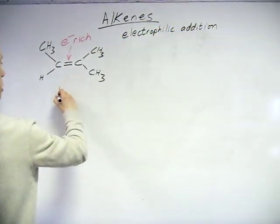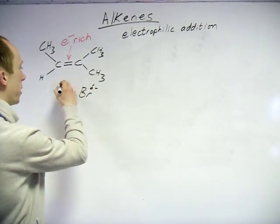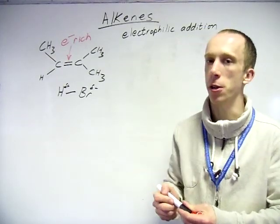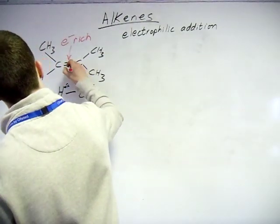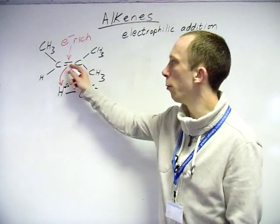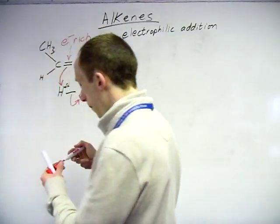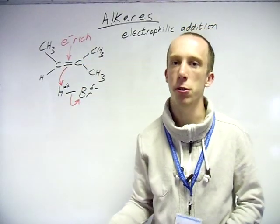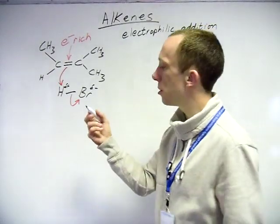Say we react with HBr. Bromine is more electronegative than hydrogen, so bromine is delta negative and hydrogen is delta positive. The electron-rich double bond is going to attack the hydrogen. Now hydrogen can only have one bond, so if one of these carbons joins to the hydrogen, this bond needs to break. I've jumped straight into asymmetrical alkenes - where it's not symmetrical around the double bond - so we are going to get a major and a minor product. We'll look at the stability of the intermediates.